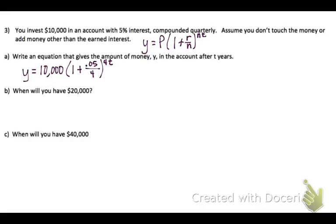Part B says when will you have $20,000? So the word when tells me that I'm going to be solving for T. So plug $20,000 in for Y.